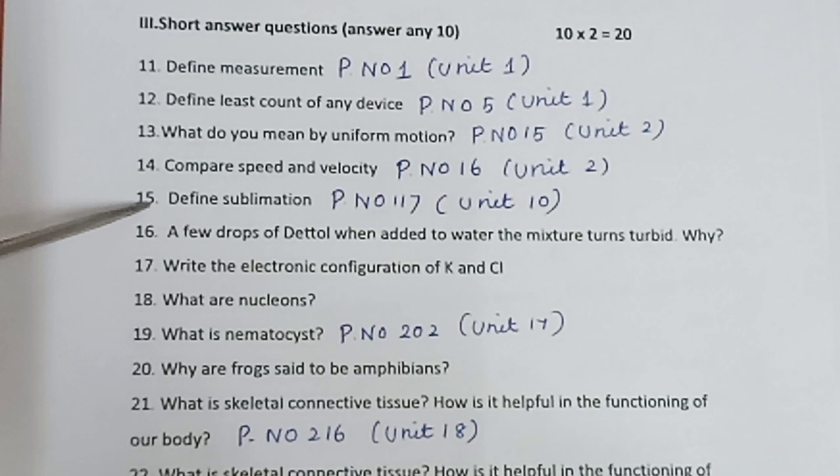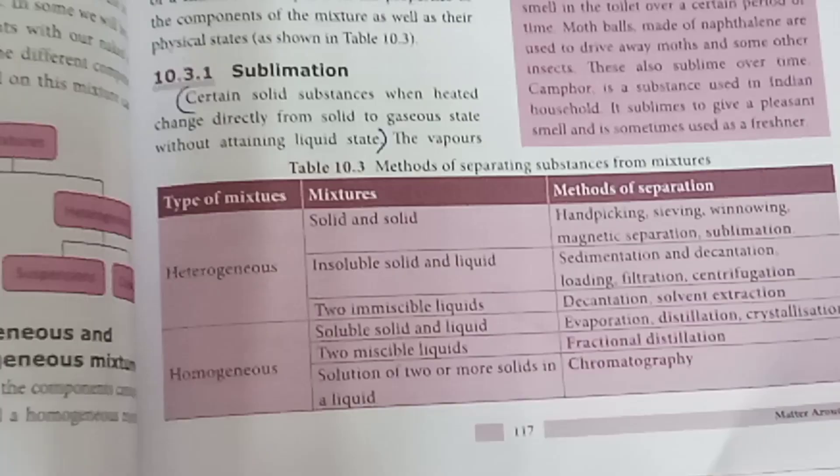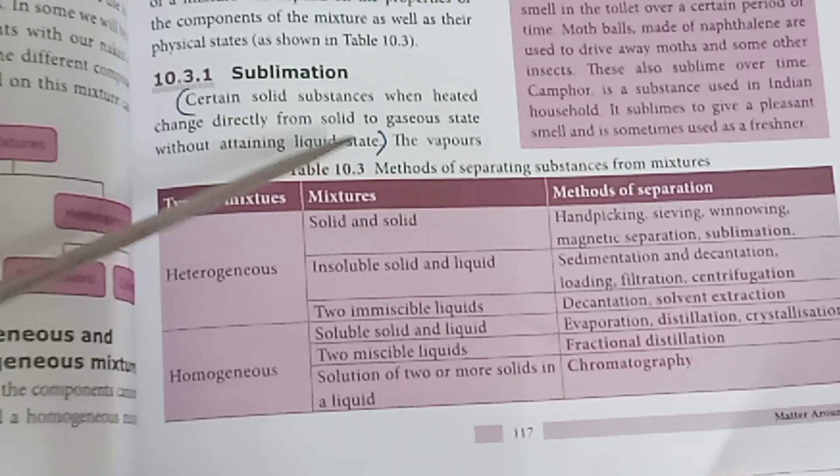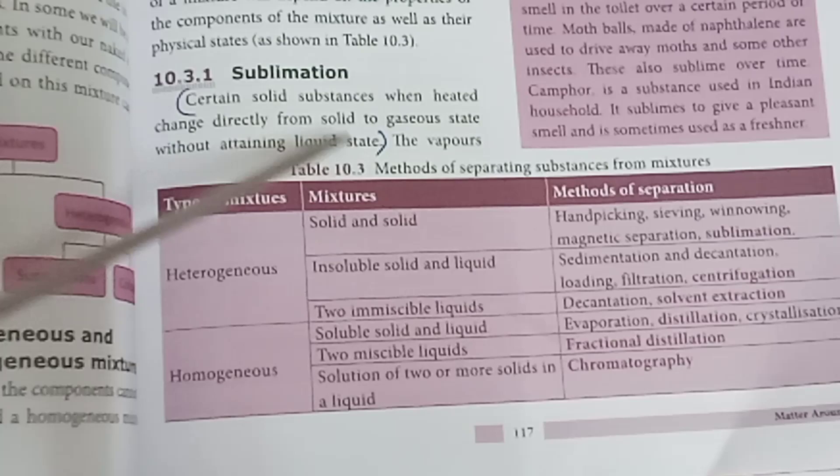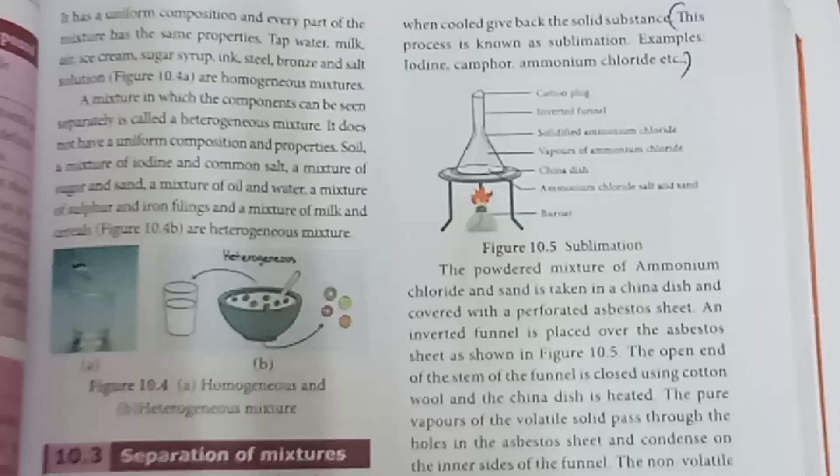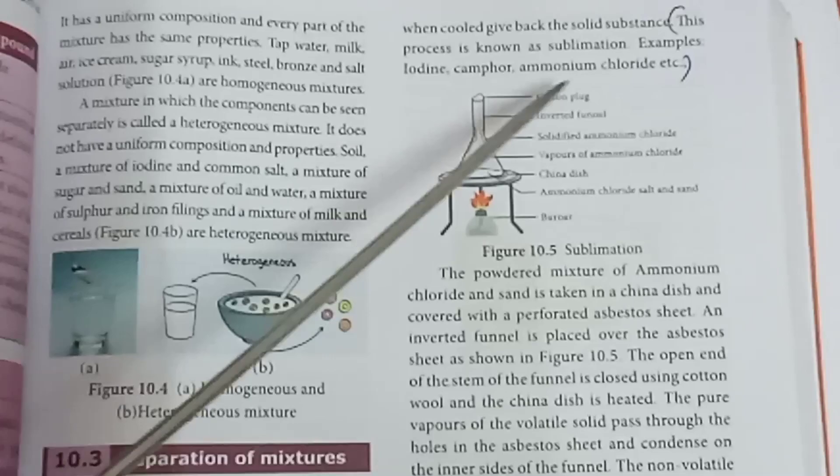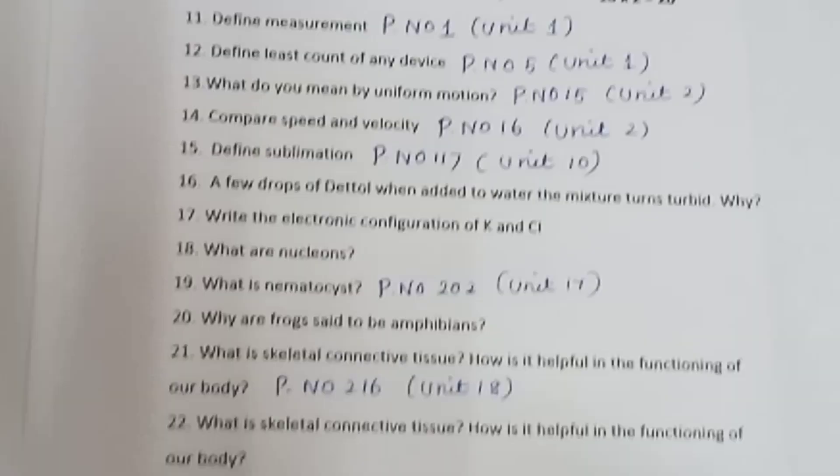Question 15: Define sublimation. Page number 117, Unit 10. Very important question. Certain solid substances when heated change directly from solid to gaseous state without attaining liquid state. You have to write any one example: iodine, camphor, or ammonium chloride.